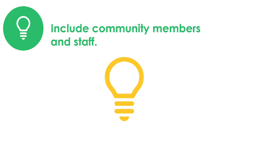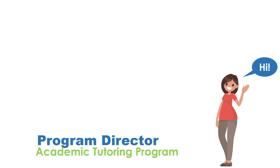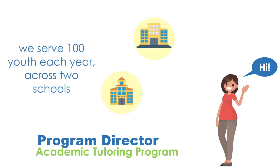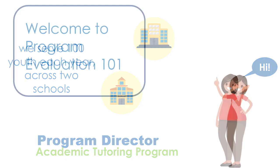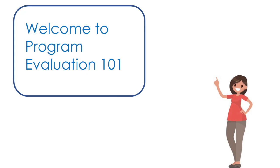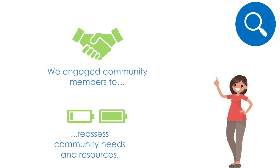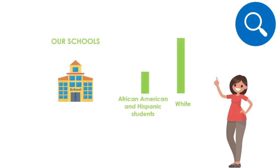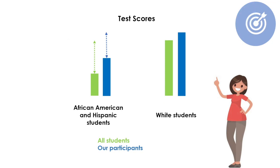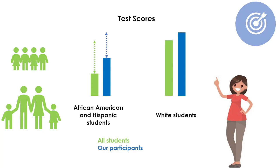Now let's check in on Maya. My name is Maya and I'm the director of a program that prepares middle school youth for success in high school by providing them with the same academic tutor for two years. We've been running the program for seven years, serving about 100 youth each year across two schools. Recently, after I attended a workshop on program evaluation, we began a journey to improve our program. We started by working with community members to reassess the needs and resources in our community. Looking at district test scores, we learned that the schools had not been as successful in helping Hispanic and African American students to achieve. After reviewing our data and having discussions with parents and students, we came to realize that we needed to do a better job meeting the needs of our African American and Hispanic students.